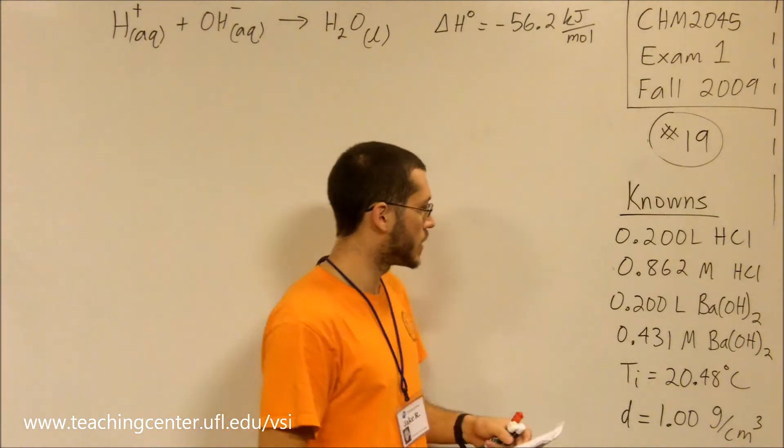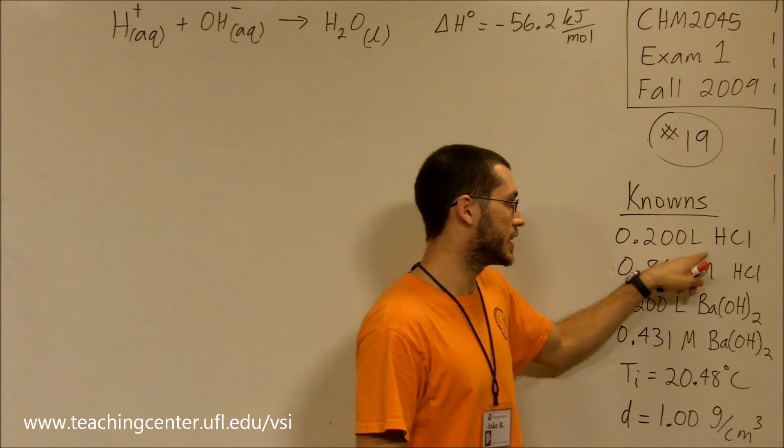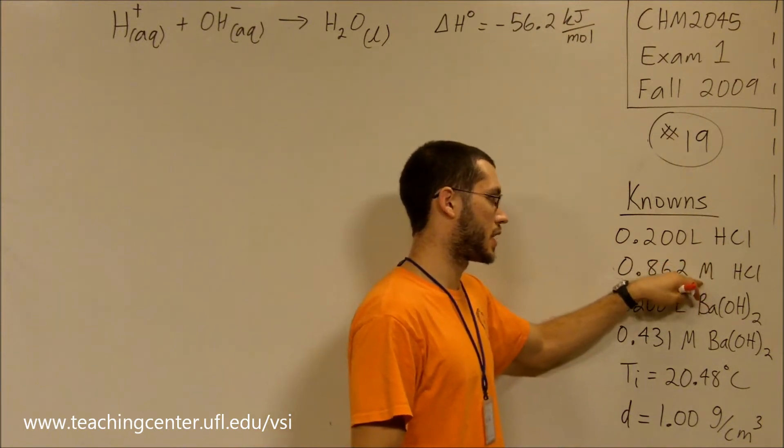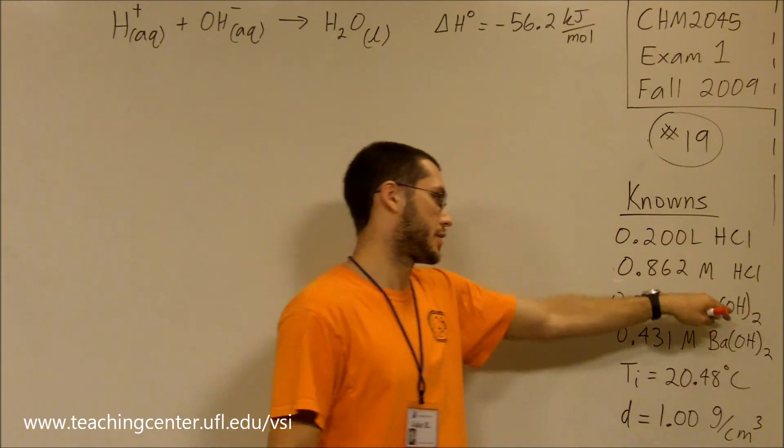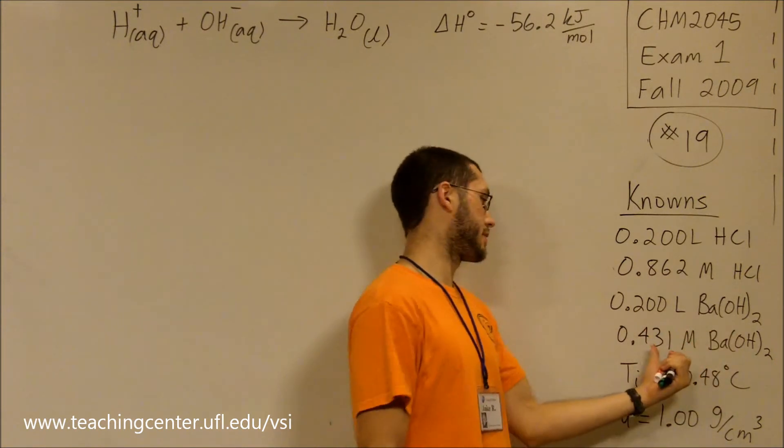We are mixing 0.200 liters of HCl with this concentration, and we have 200 mL barium hydroxide at this concentration.